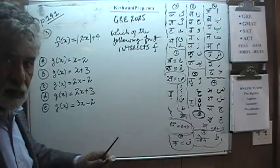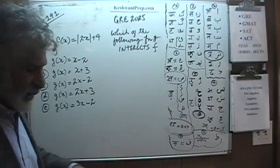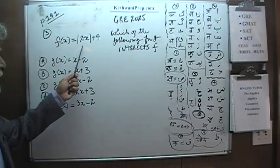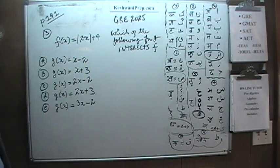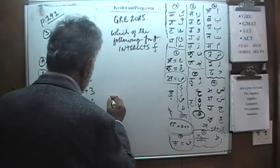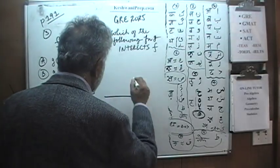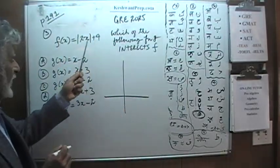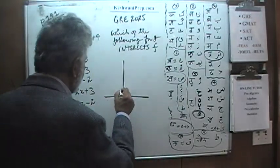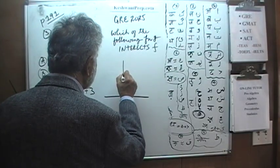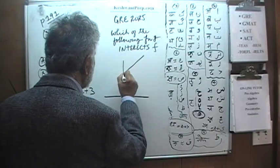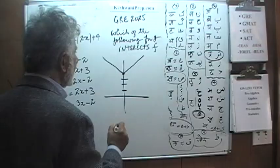Let's plot it — it will be easier to talk about if we plot it. This is straightforward because its absolute value gives a slope of plus or minus 2, and it starts at 4. So when x is 0, y is 4. It starts there and has a slope of 2. That part is f.